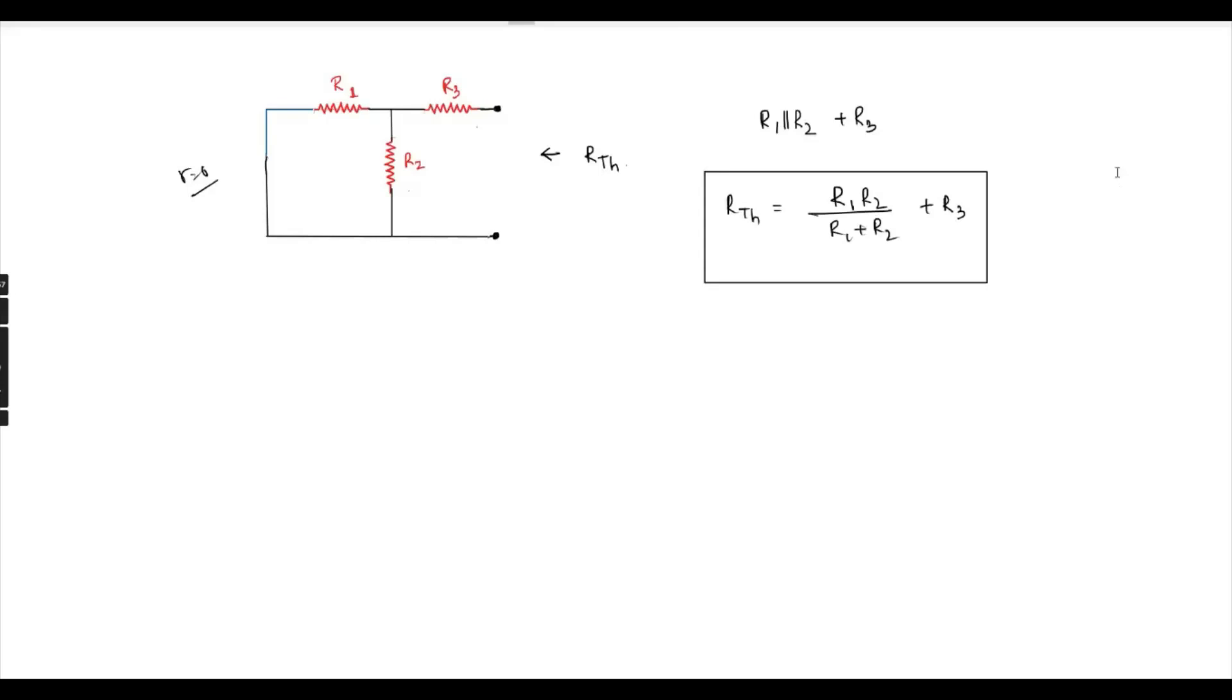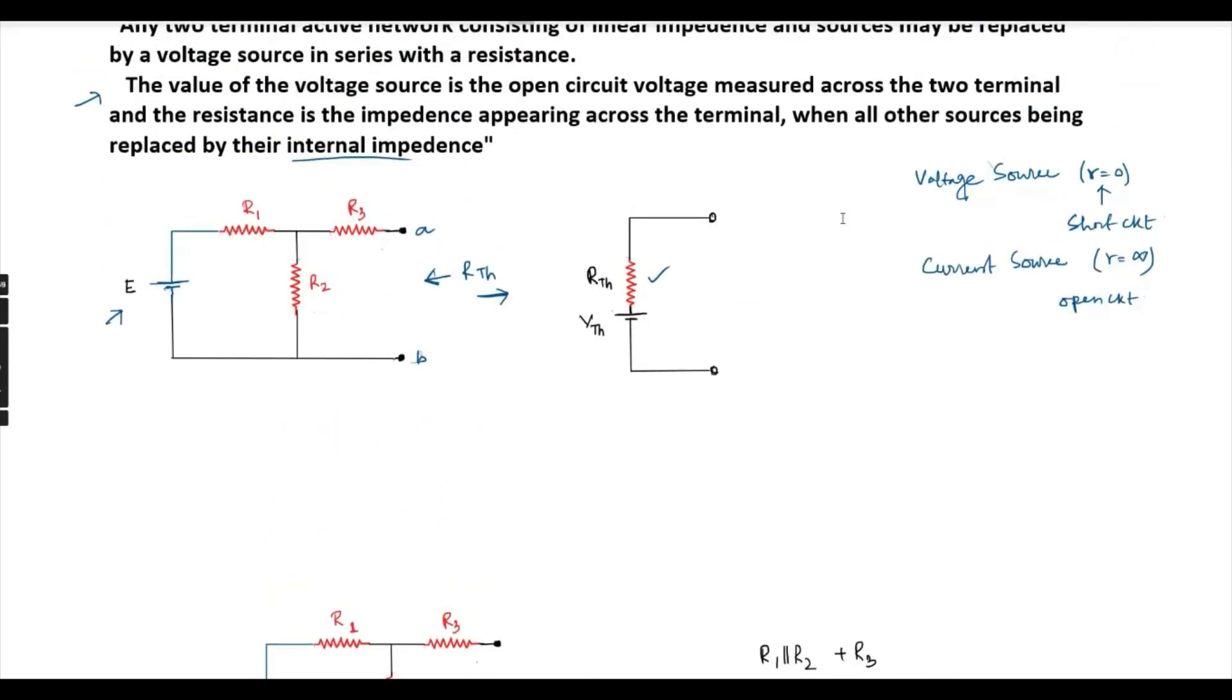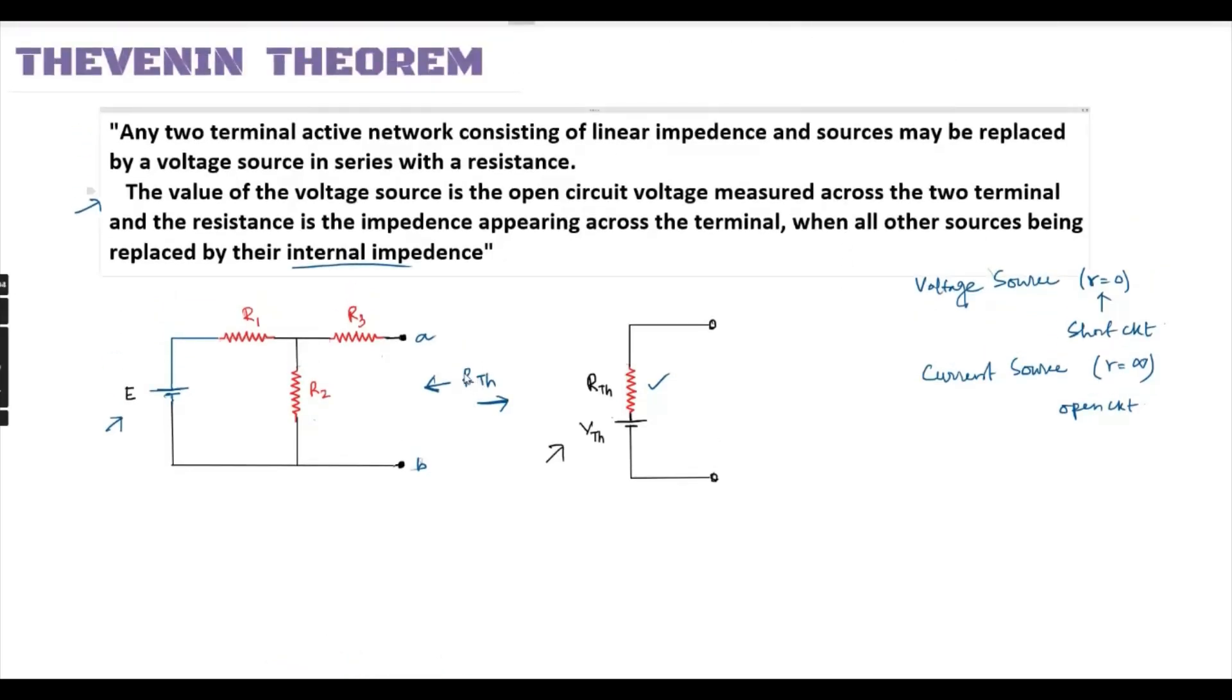VTS is the Thevenin voltage. The value of the voltage source is open circuit voltage measured across the terminals. Open circuit voltage across A and B is the open circuit voltage. For resistance we consider open terminals across A and B to find the voltage drop.